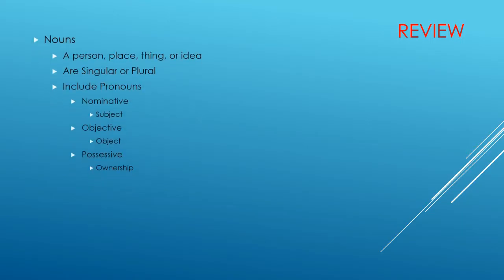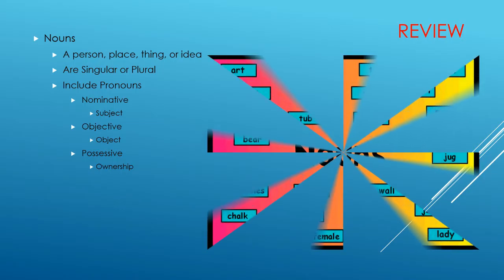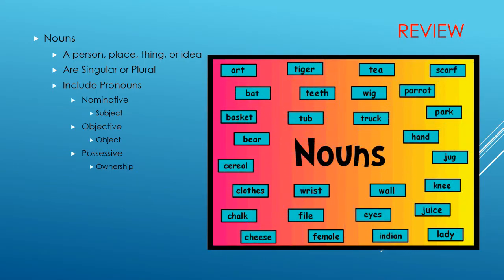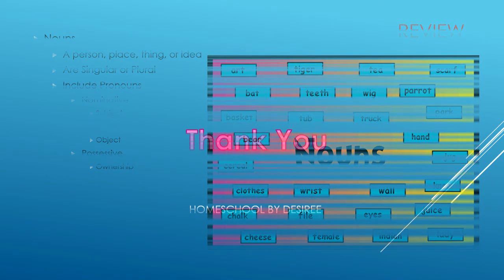Let's review. We have learned that nouns are a person, place, thing, or idea. They can be singular or plural. They can be common or proper. Nouns include pronouns, which actually take the place of nouns. Pronouns are nominative, which are the subject, objective, which is the object, and possessive, which demonstrates ownership.